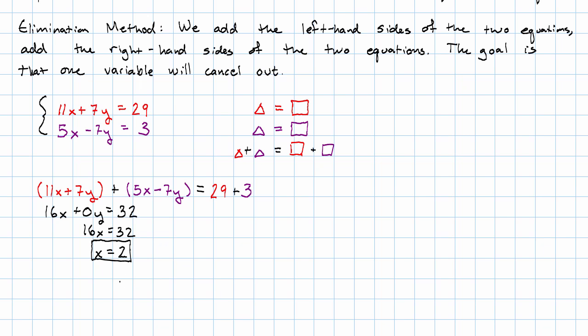Now we can go back and plug in x is 2 to whichever equation we like better. Neither one seems obviously easier, so I'm going to use the first one. 11 times 2 plus 7y is 29. That's 22 plus 7y is 29. Subtracting 22 on both sides, we get 7y is 7. And so, y is 1.